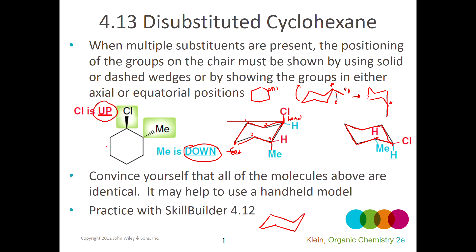I could put the chlorine on any one of these carbons since they're all equivalent before anything's attached. Since the chlorine has a solid wedge, it has to be coming up. Every other carbon will have a group coming straight up, and every other carbon will have a group coming up at an angle. The carbons that have groups coming straight up are the ones slightly elevated compared to the other three. So if I connect the chlorine to a different carbon, it would be coming up at an angle, which is what I see when I flip the ring.